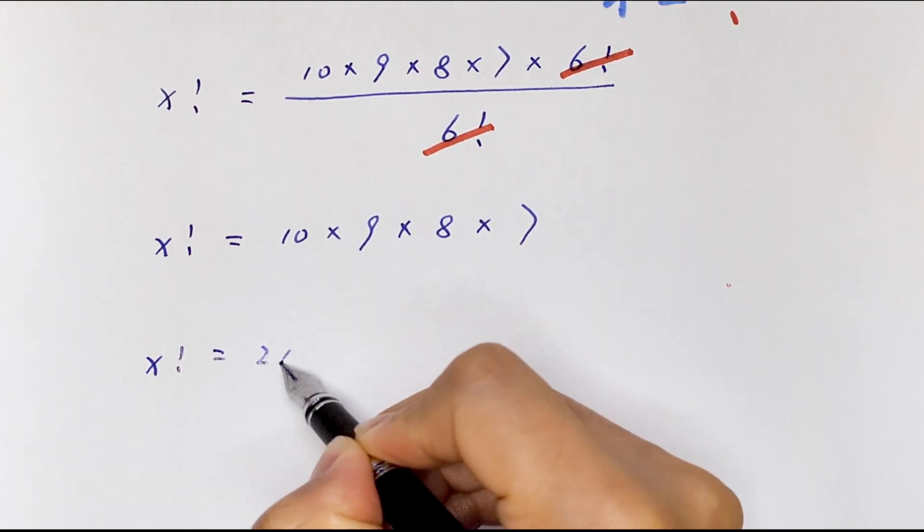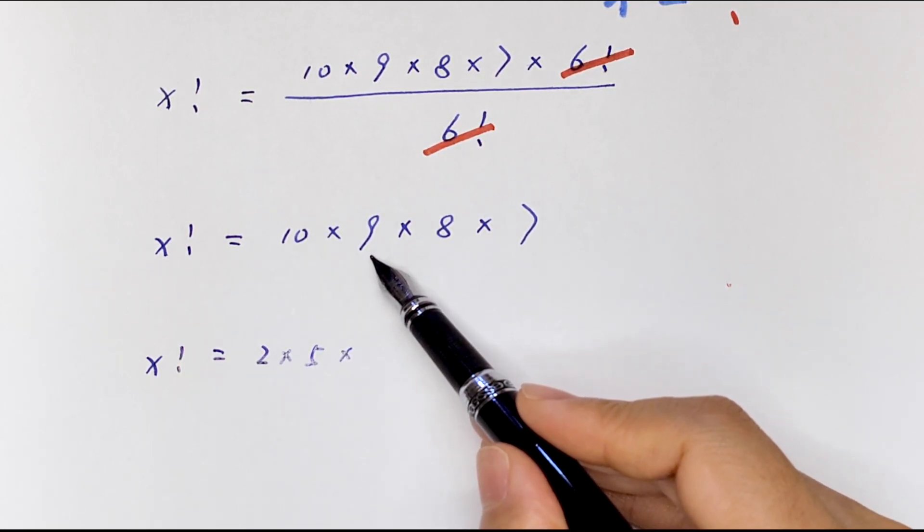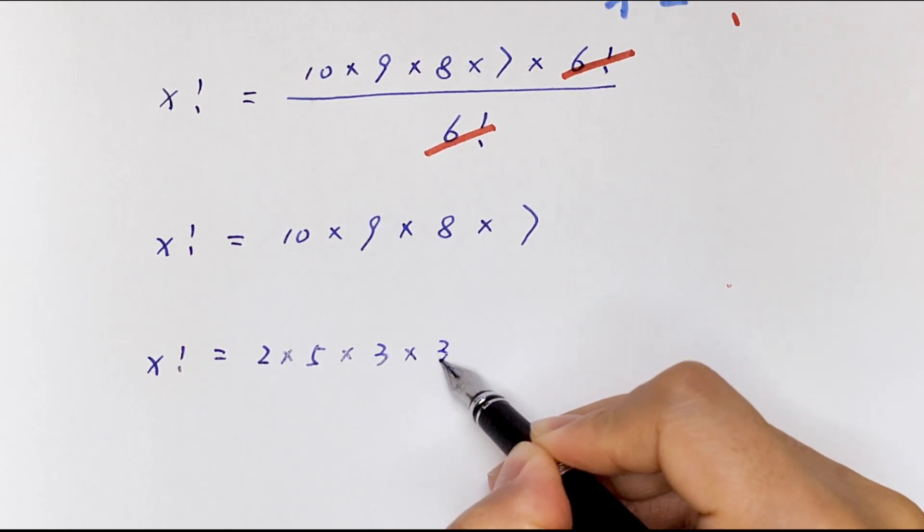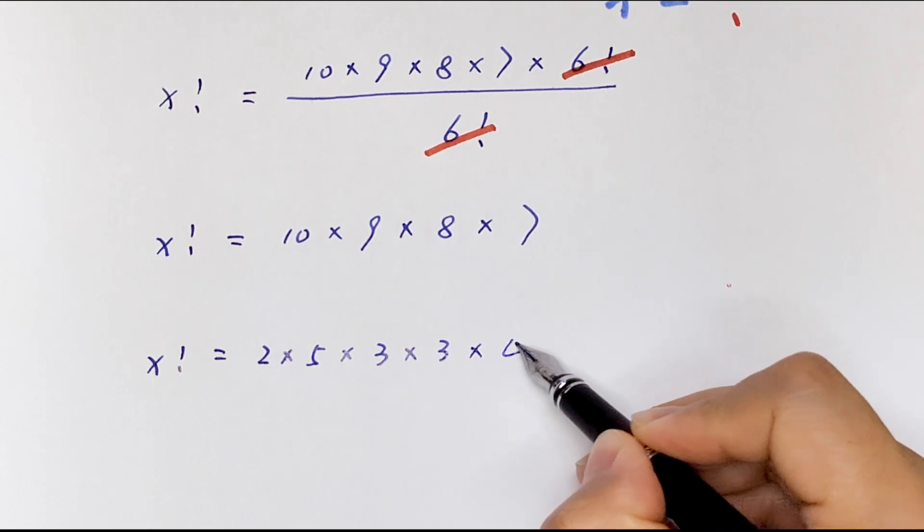Then x factorial is equal to 10, which is the same as 2 times 5, times 9, which is the same as 3 times 3, times 8, which is the same as 4 times 2 times 7.